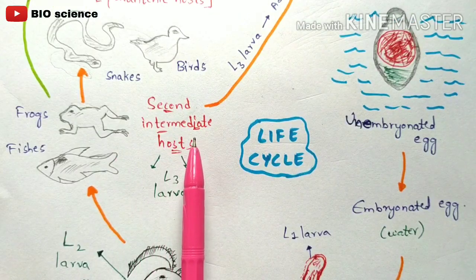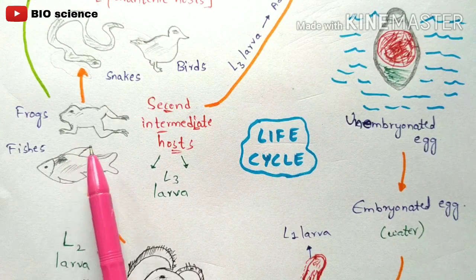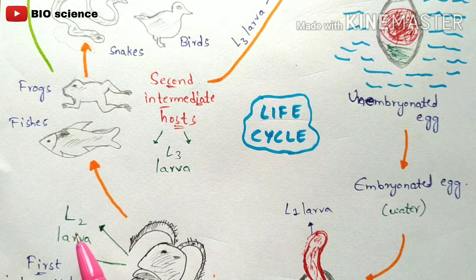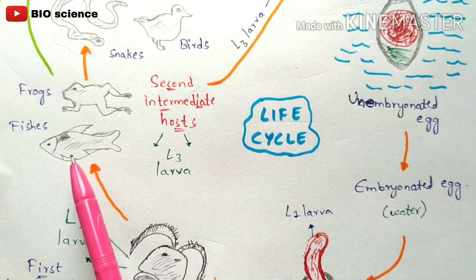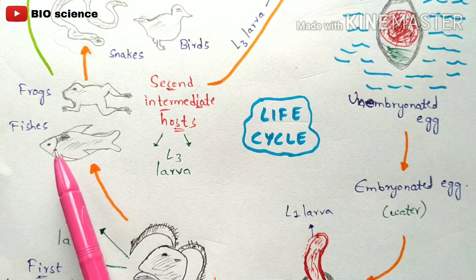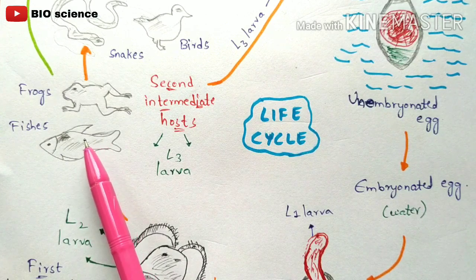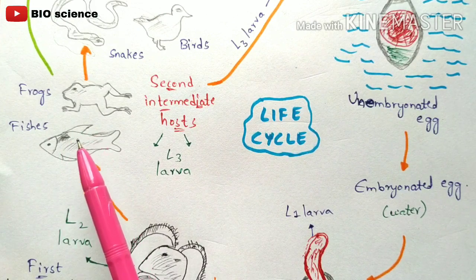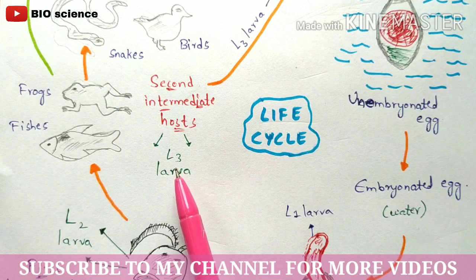Next, the second intermediate hosts perform their function. The best examples of the second intermediate hosts are fishes and frogs, which survive in water. They consume the Cyclops — the first intermediate host — which contains L2 larvae. Once consumed, the L2 larvae enter the gut of the frogs and fishes, then migrate into their tissues and develop completely into L3 larvae, also called third stage larvae.